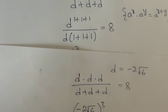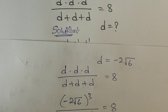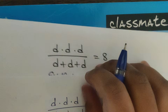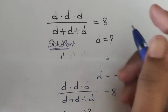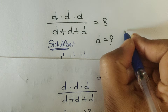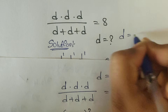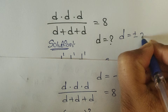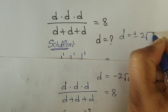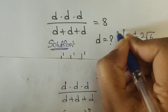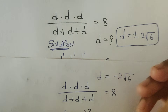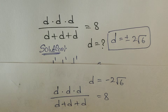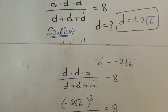So d is equal to plus or minus 2 square root of 6. This is the final answer. Thank you for watching.